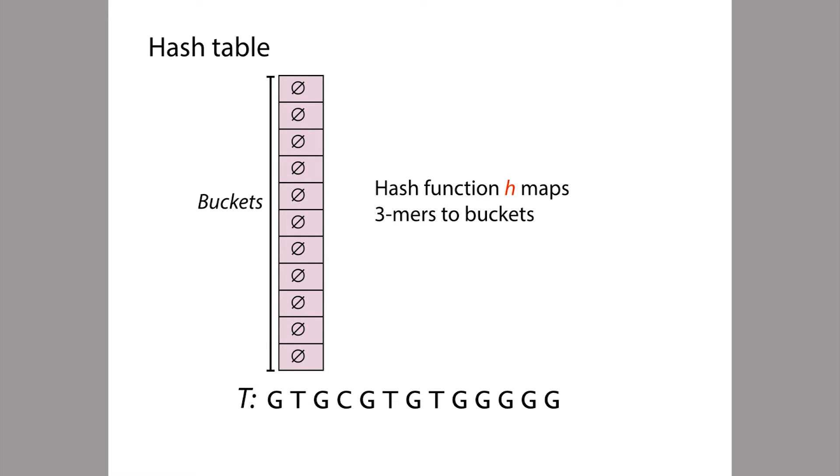Also associated with this table is a hash function, which we'll refer to with this red H. And the hash function maps each distinct key, each distinct 3mer, onto one of these buckets in this array. In our grocery store analogy, you can think of the buckets as aisles of a grocery store and the hash function as the way that we assign groceries to aisles.